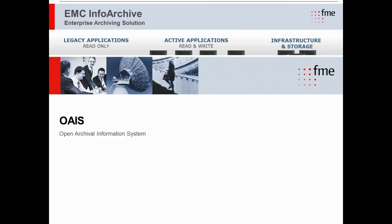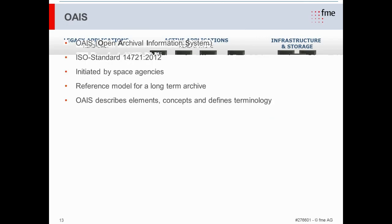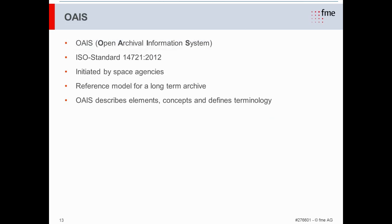Let's talk about OAIS, which stands for Open Archival Information System — an ISO standard. The first ISO standard is from 2003 and the latest from 2012. OAIS was initiated by space agencies in the 1990s. It is a reference model for long-term digital archives, describing elements, concepts, and terminology of an archive. It is not an implementation description — it is a reference model.